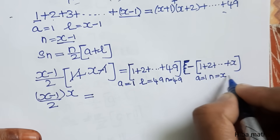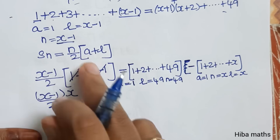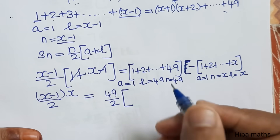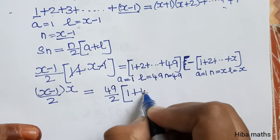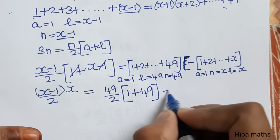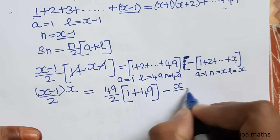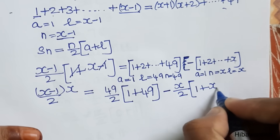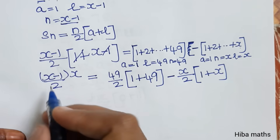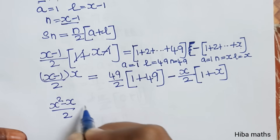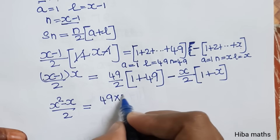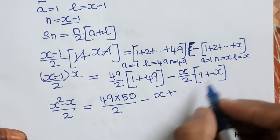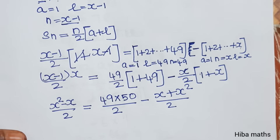Now A value is 1, N value is x, L value is x. Substituting into the formula: 49 by 2 into A value 1 plus L value 49. So 49 into 50 by 2. Then x squared minus x by 2 is equal to 49 into 49 plus 1, which is 50 by 2 minus x plus x into x, giving x squared divided by 2.